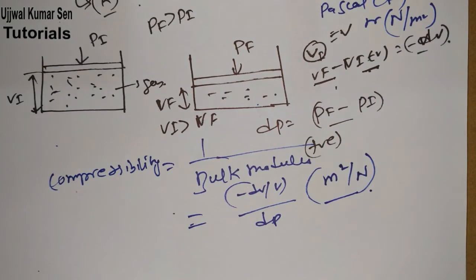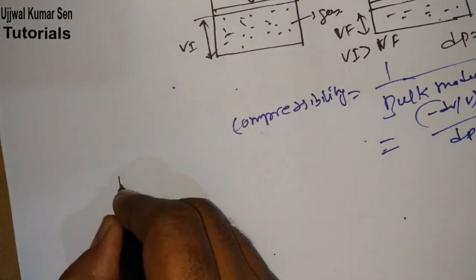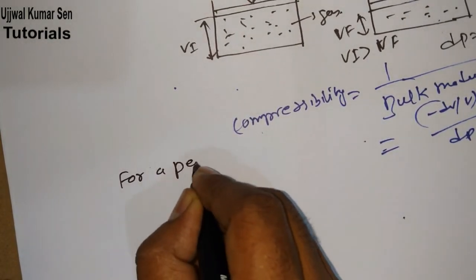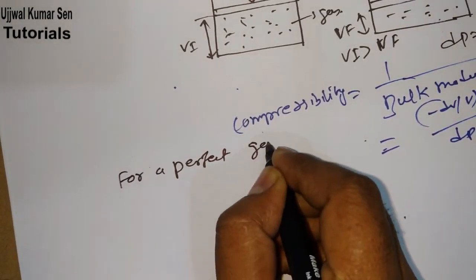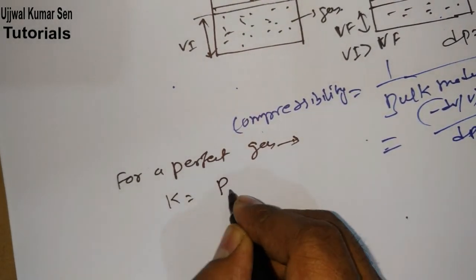Now I will share with you most important key points which will definitely help you in the complete examination. For a perfect gas, K is equal to Pf for isothermal process.